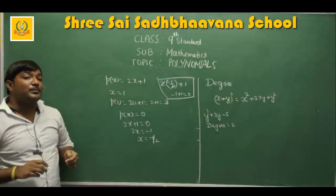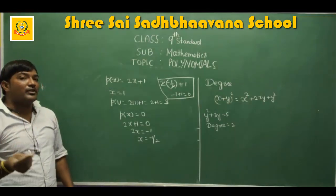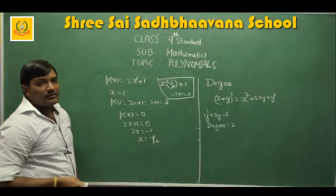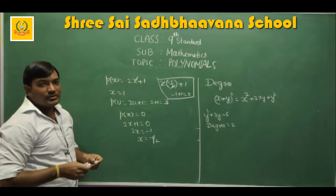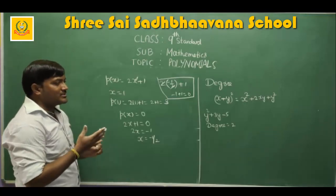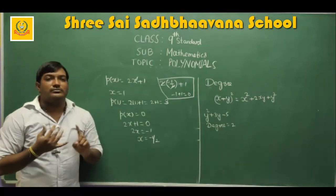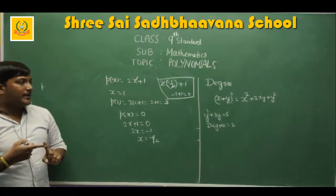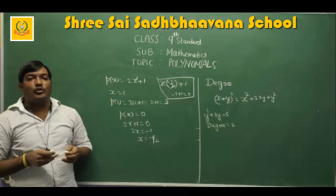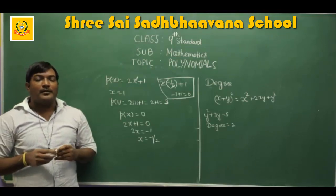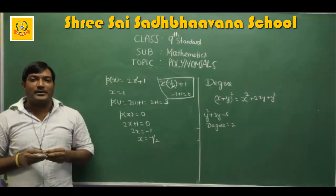I hope you understood. Let me recap what we discussed in this session: constants, variables, degree of a polynomial, and finding the zeros of polynomials with examples. Please share, comment, like, and subscribe to our channel. Thank you very much, take care.